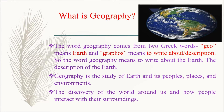First let's see about what is geography. The word geography comes from two Greek words — geo means earth and graphos means to write about or description. So the word geography means to write about the earth, in other words the description of the earth. Geography is the study of earth and its peoples, places and environments.